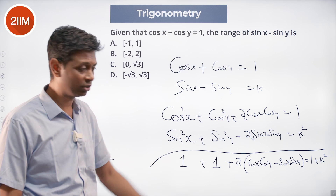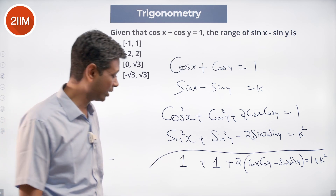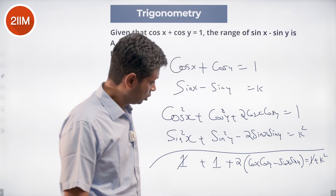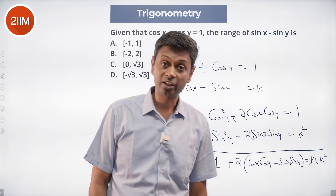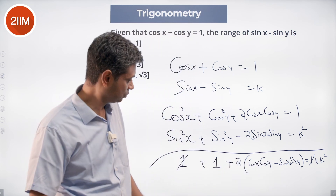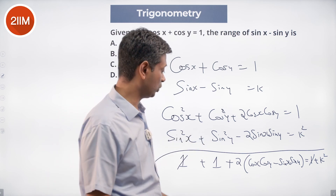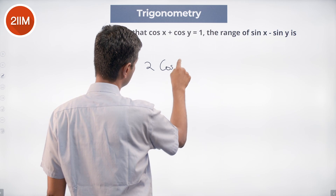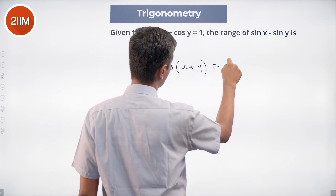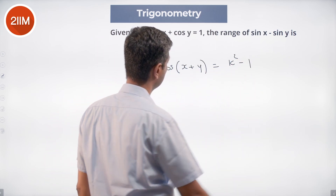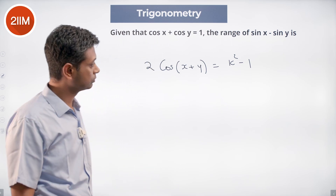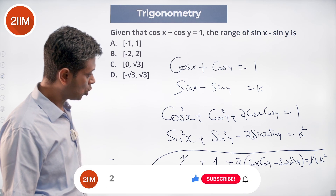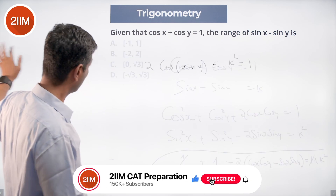This is 1 plus 1 plus 2 times this equals 1 plus k squared. 1 gets knocked off. Cos x cos y minus sin x sin y is cos of x plus y. So 2 cos of x plus y.